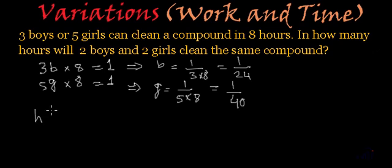So H multiplied by the working capacity of two boys and two girls that will be 2B plus 2G and this will be equal to 1.